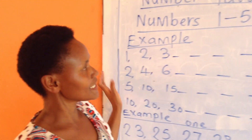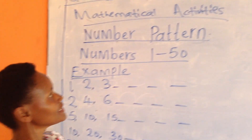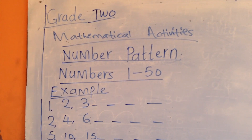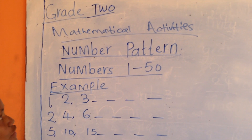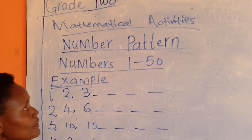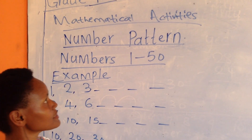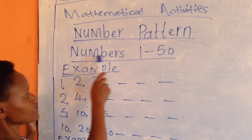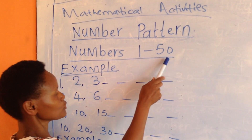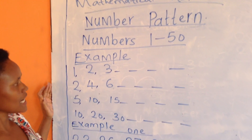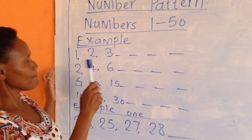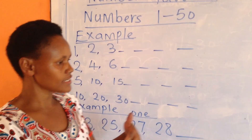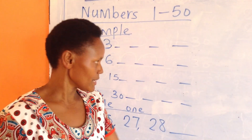Good afternoon learners. Today we are going to learn number pattern, grade 2 maths activity. We are going to look at numbers from 1 up to 50. Number patterns is the way we arrange the numbers.